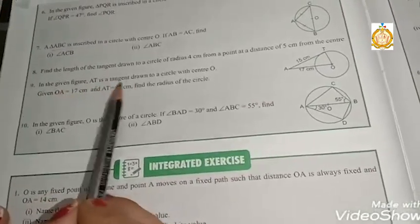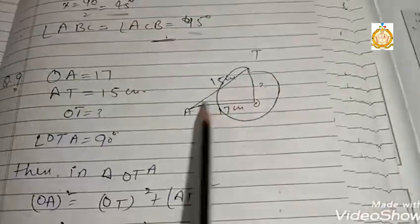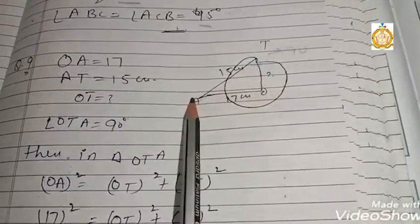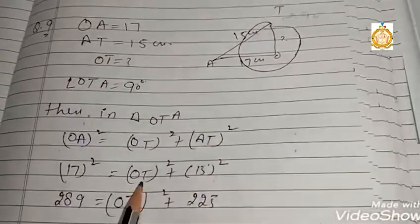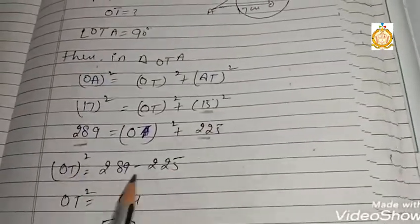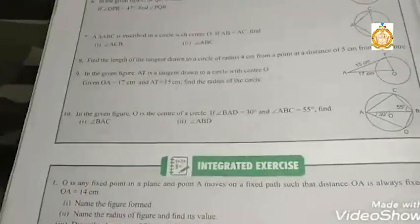In the given figure, AT is a tangent drawn to a circle with center O. OA equals 17 centimeters and AT equals 15 centimeters. Find the radius OT. Since the tangent is perpendicular to the radius at the point of contact, we use the Pythagorean theorem: OA² equals OT² plus AT². So 17² equals OT² plus 15², giving 289 equals OT² plus 225. Therefore OT² equals 64, and OT equals 8 centimeters. The radius of the circle is 8 centimeters.